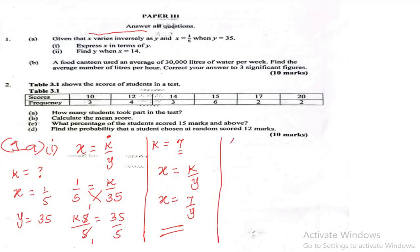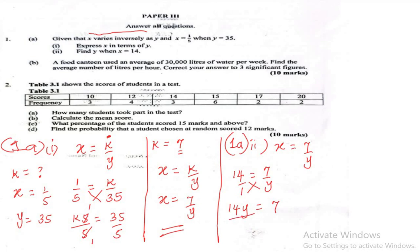For 1a(ii), the question says: find y when x equals 14, given that x equals 7 over y. When x is 14, we have 14 equals 7 over y. Cross multiplying gives 14y equals 7. Dividing both sides by 14, y equals 7 over 14. Simplifying gives y equals one half, or 0.5. That is the value of y.